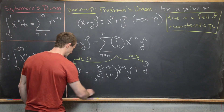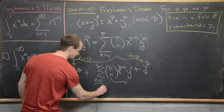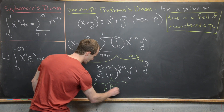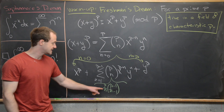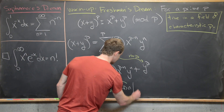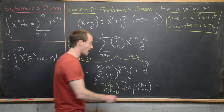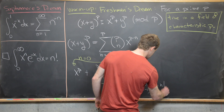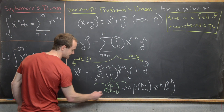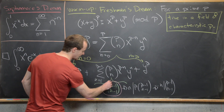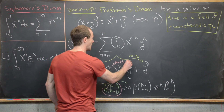Now we use a binomial coefficient identity on the middle sum: p choose n equals p divided by n, times p minus 1 choose n minus 1. This tells us that n divides p times (p minus 1 choose n minus 1). But since n is less than p and p is prime, that tells us that n divides (p minus 1 choose n minus 1), so (p minus 1 choose n minus 1) over n is a whole number, meaning the whole expression is a multiple of p.